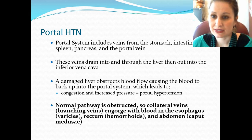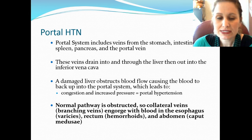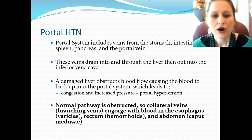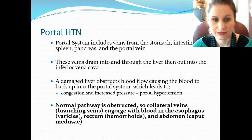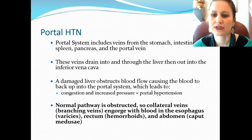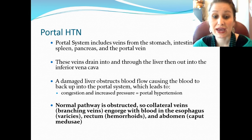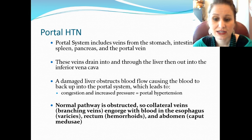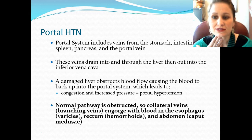Portal hypertension occurs with cirrhosis. The portal system — veins of the stomach, intestines, spleen, and pancreas draining through the portal vein — normally drains into and through the liver, then out through the inferior vena cava. A damaged liver obstructs that blood flow, causing blood to back up into the portal system. This backflow creates congestion and increased pressure — portal hypertension — causing the branching veins to engorge with blood.